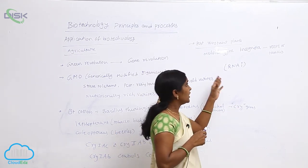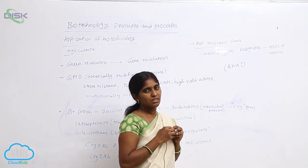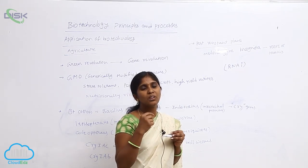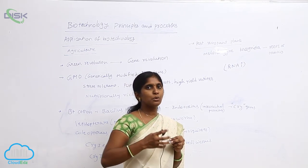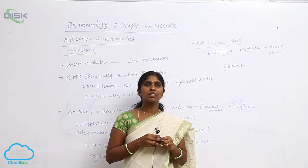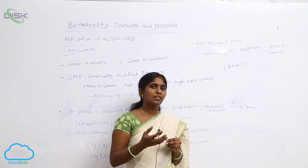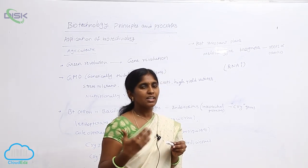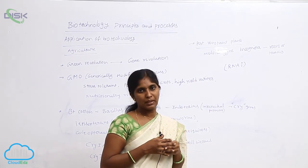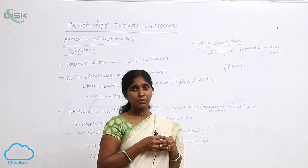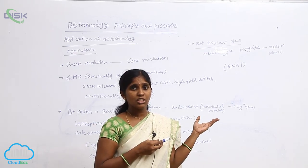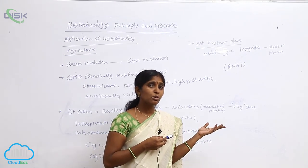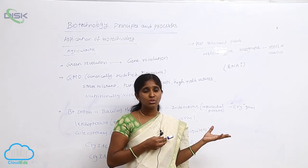To prepare pest-resistant crops, first they selected and isolated the nematode gene. Then, by using Agrobacterium — specifically the Ti-plasmid — the nematode gene is transferred into the tobacco plant. The tobacco then becomes GM tobacco, genetically modified tobacco, which now carries the nematode gene.